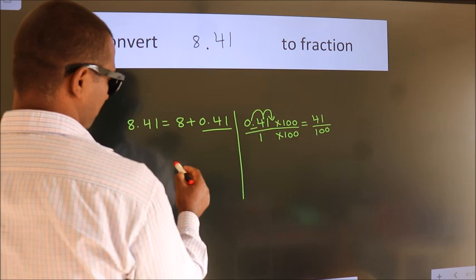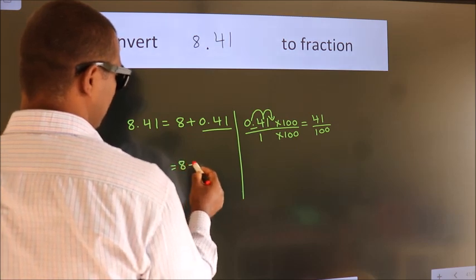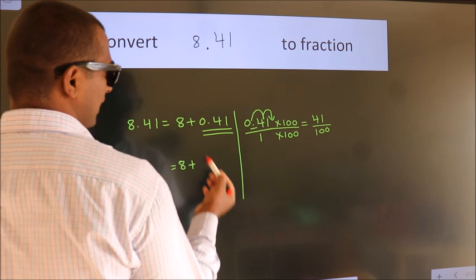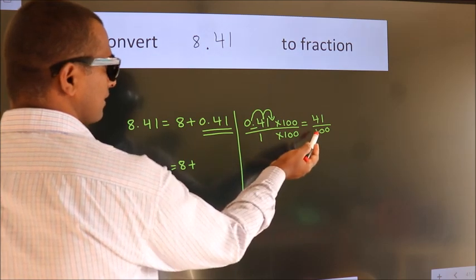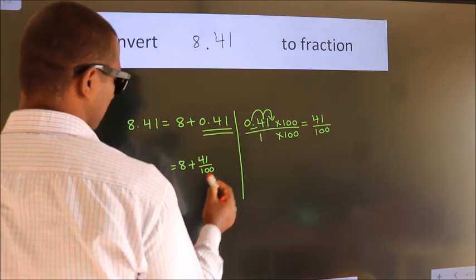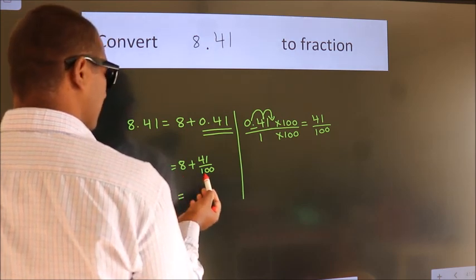Now here, 8 plus, in place of 0.41, we write this fraction 41 by 100. So 8 plus 41 by 100.